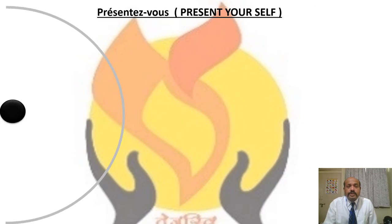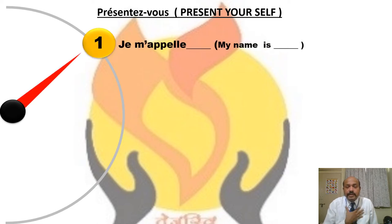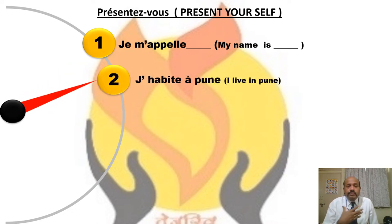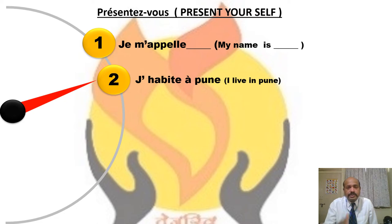Au revoir. Now, Je m'appelle — after Je m'appelle, you tell your name. For example, Je m'appelle Srinivas. Where do you live? J'habite à Pune — I live in Pune. Instead of Pune, you can use whichever place. Apart from countries, we use different prepositions for cities.